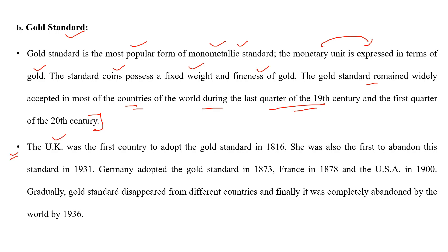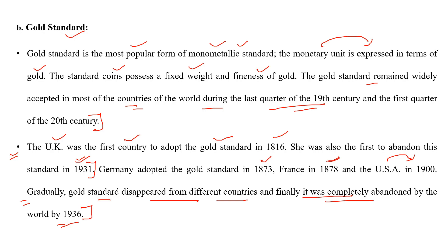United Kingdom पहला देश था जिसने इस standard को adopt किया था — 1816 में — और वही पहला देश था जिसने इसे abandon किया, मतलब इस system को छोड़ दिया — 1931 में। Germany ने gold standard को adopt किया था 1873 में, France ने 1878 में, और United States of America ने 1900 में adopt किया था। Gradually gold standard disappear हो गया पूरी दुनिया से, and finally completely abandoned कर दिया गया in the year 1936।